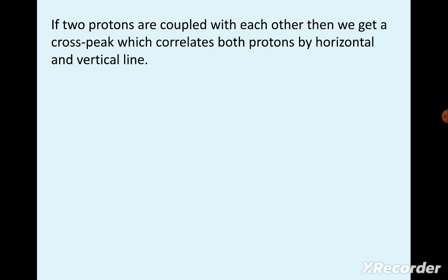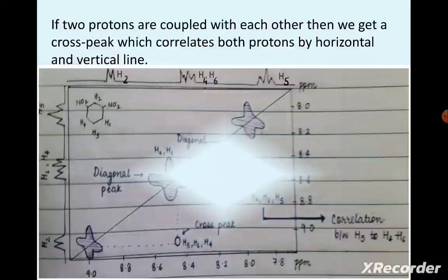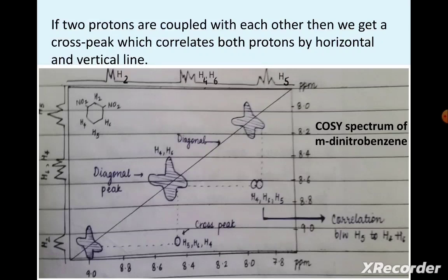If two protons are coupled with each other, then we get a cross peak which correlates both protons by horizontal and vertical lines. Here is how the COSY spectrum of meta-dinitrobenzene looks like.